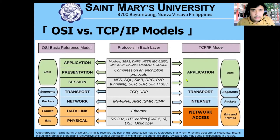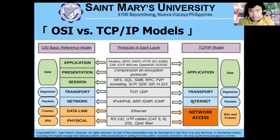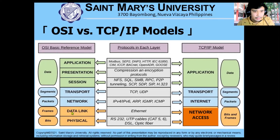Under the application layer, the information is called data. Under the transport layer, the information is called a segment. Under the internet layer, it is called packets, and at the network access layer it is called bits or frames. Similarly in the OSI model: application, presentation, and session layers all use the term data; transport uses segment; network uses packets; data link uses frames; and physical uses bits.